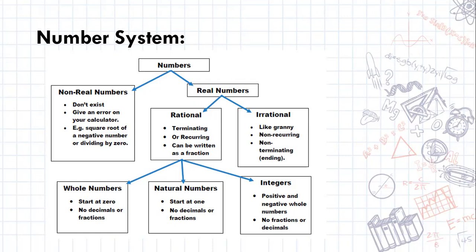So real numbers are broken up into rational numbers and irrational numbers. Rational numbers are terminating in other words they end so they are 3.4 and nothing else, or they are recurring in other words 3.4444. So rational numbers can be written as a fraction.